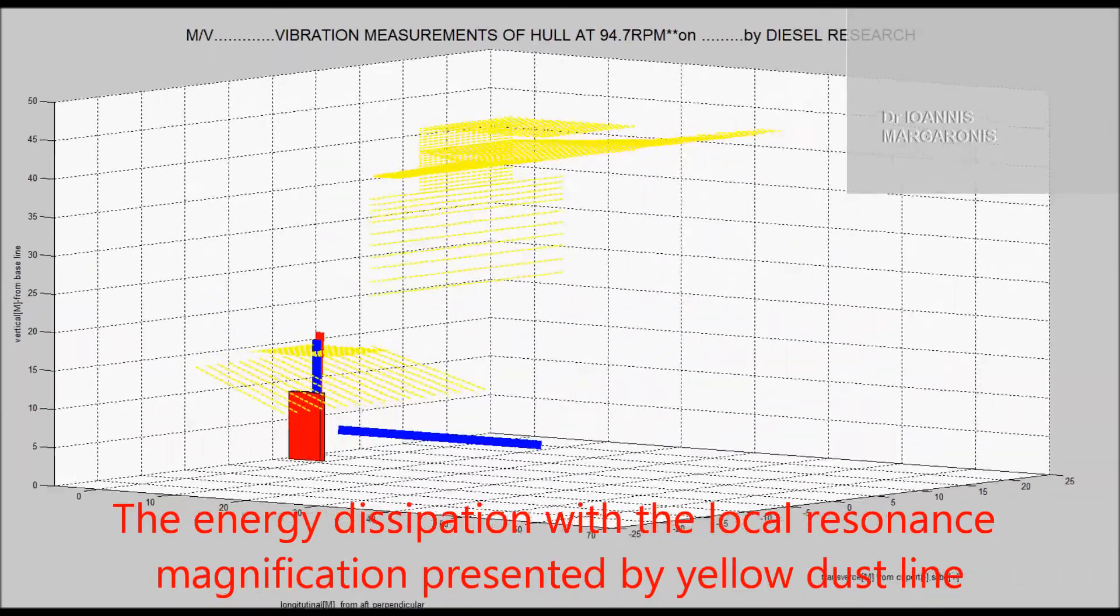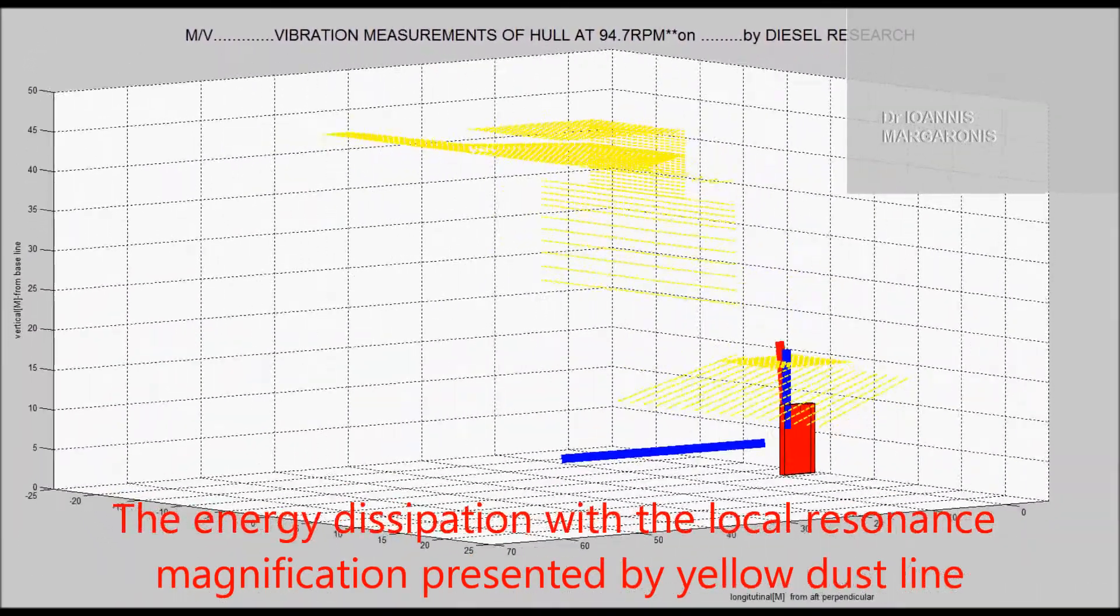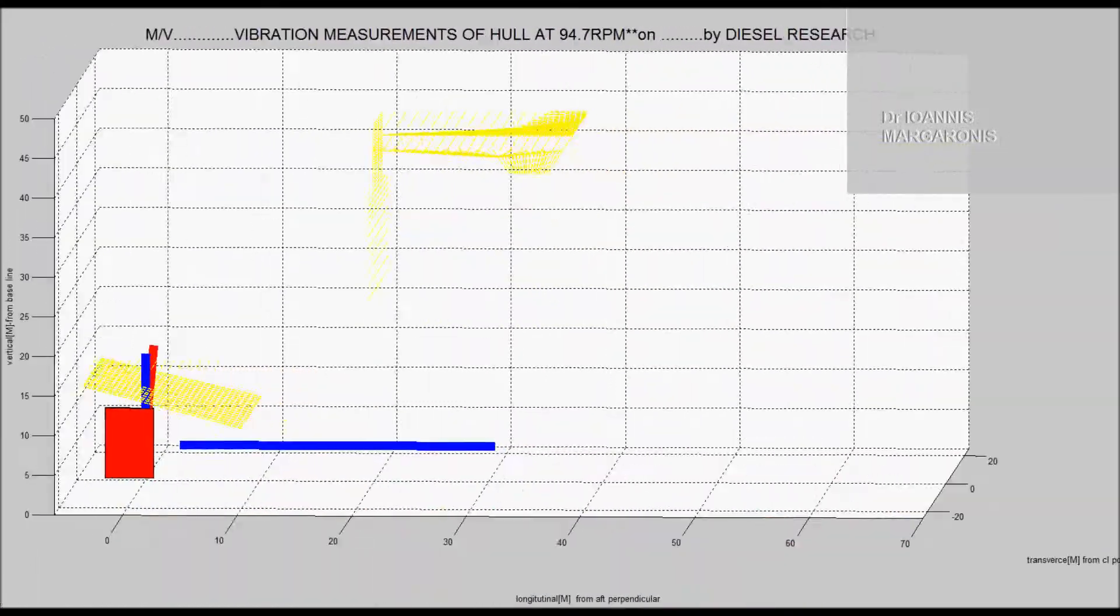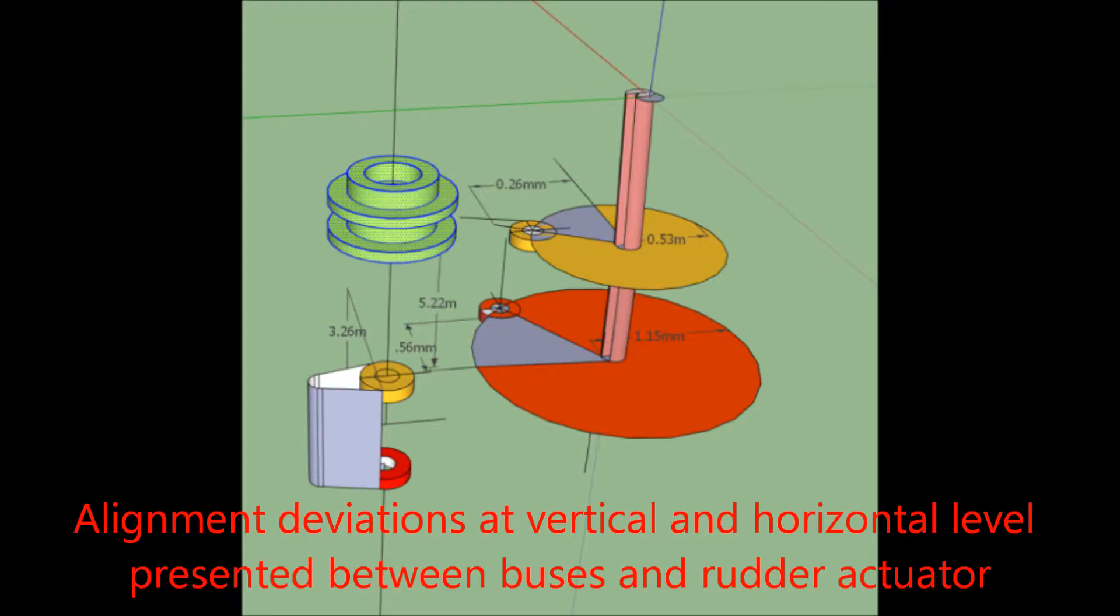The energy dissipation with the local resonance magnification presented by yellow dashed line. Alignment deviations at vertical and horizontal level presented between bosses and rudder actuator.